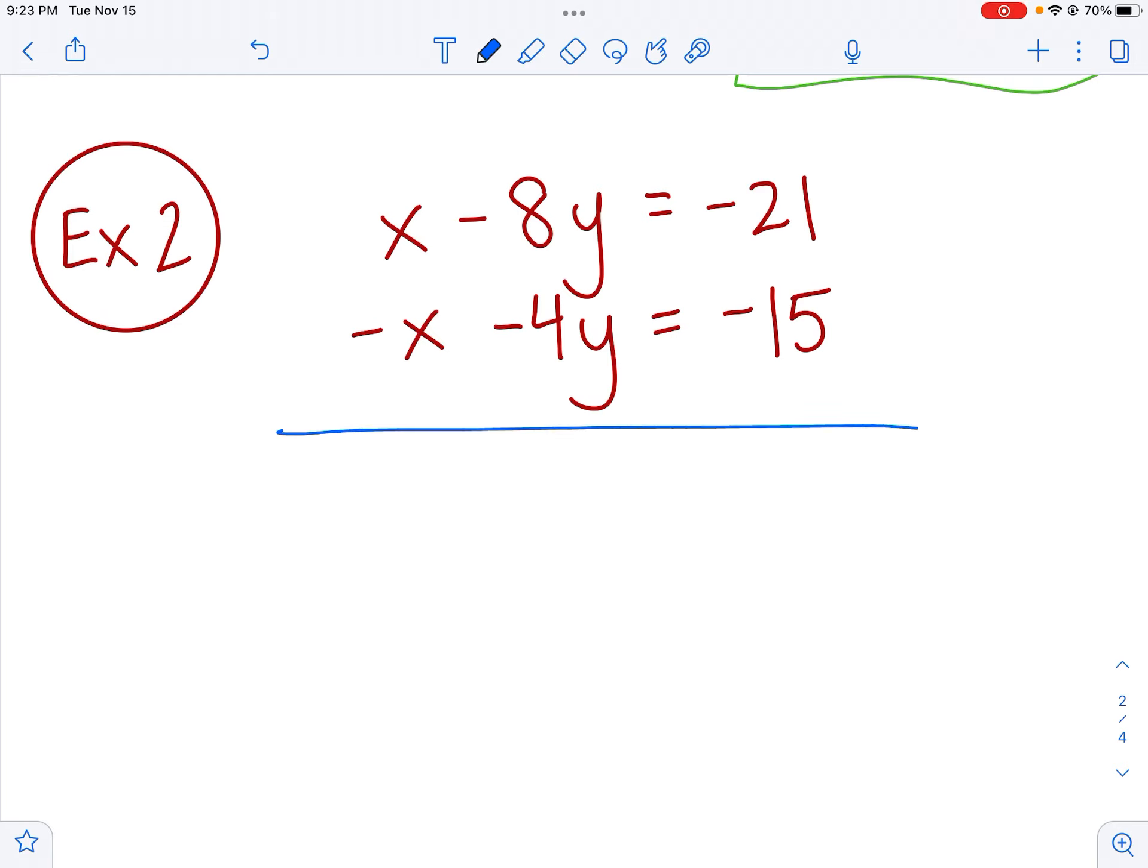All right. So as you come back, hopefully you realize that if you add your equations here, the x's will disappear. So you'll get 0x, which doesn't do anything. And if we keep adding the rest of this, we're going to get negative 12y. And on the right side, we're going to get negative 36. And from here, now it's pretty quick to solve for y. You just divide it by negative 12. Divided by negative 12. And you get that y is 3. Hooray.